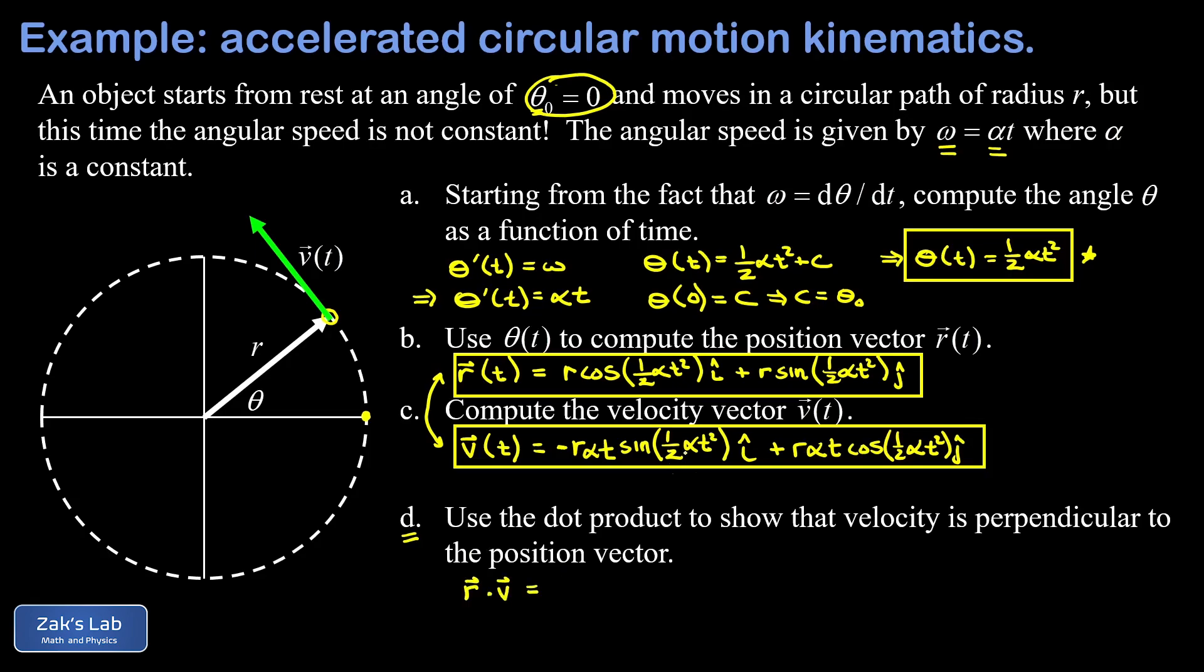If I take r dot v, my first term gives me a negative r squared alpha t times the cosine of one-half alpha t squared times the sine of one-half alpha t squared. And then for my product of y components, I have a plus sine and an r squared alpha t, and then the sine of one-half alpha t squared and the cosine of one-half alpha t squared.